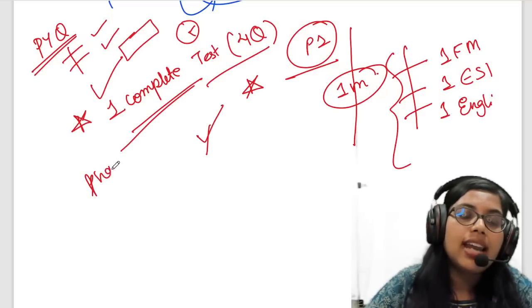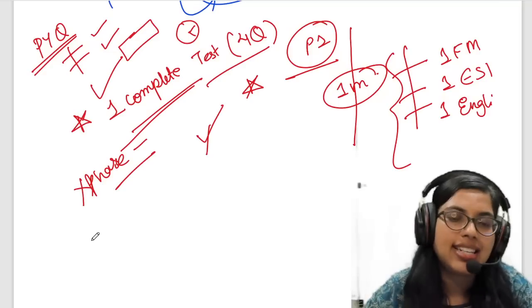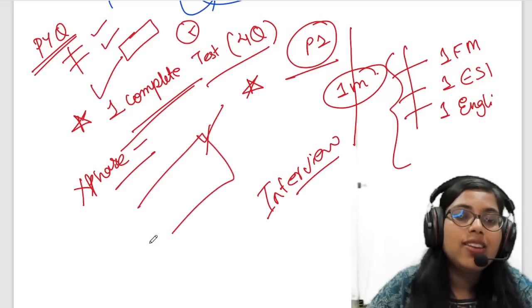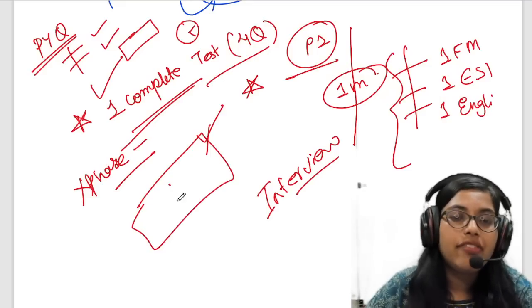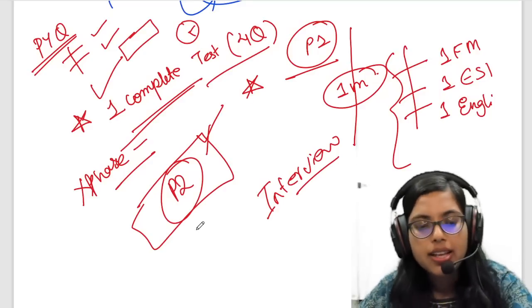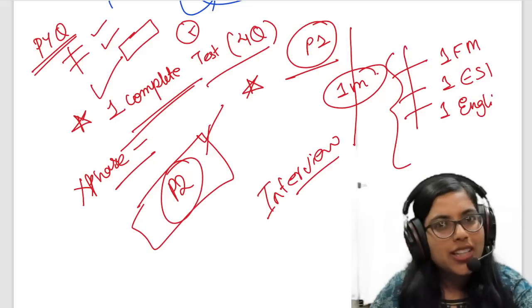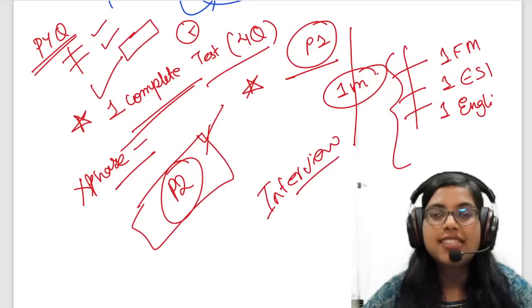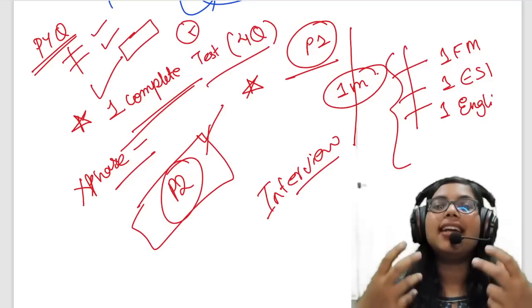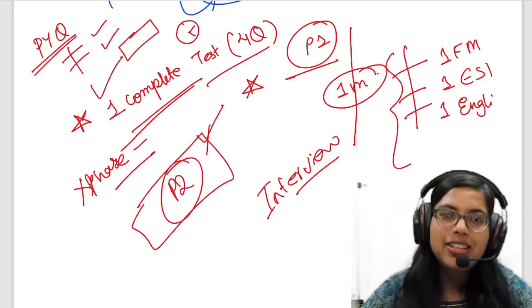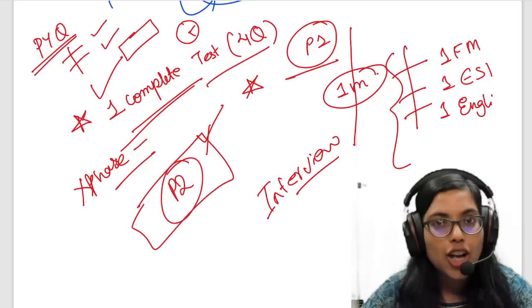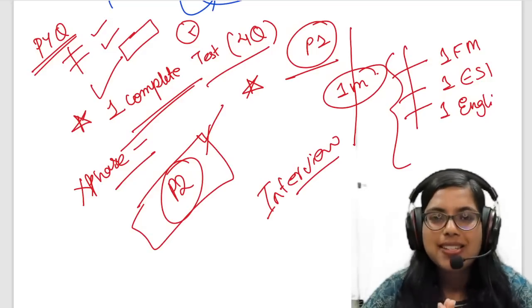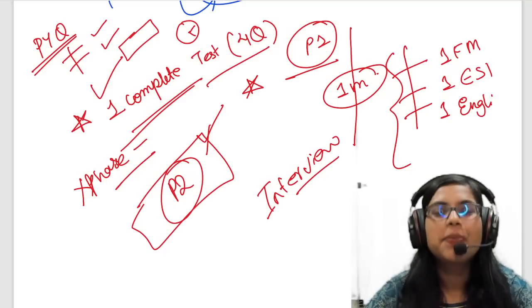Phase 1 is qualifying — marks will not be counted for your final selection. The interview stage is unpredictable, so where can you score maximum and increase your chance of success is Phase 2. Make your Phase 2 the best it can be. Such similar answer writing sessions will be taken up regularly on YouTube as well. Both YouTube students and enrolled students — please watch these sessions and get an idea of how an answer should be written. If you have any suggestions, write them in the comment section. Do not forget our team is coming up with a surprise — stay tuned. All the best, everyone, and God bless.